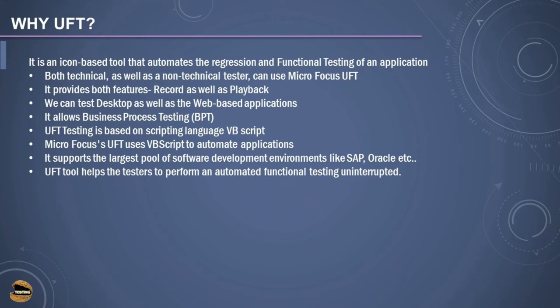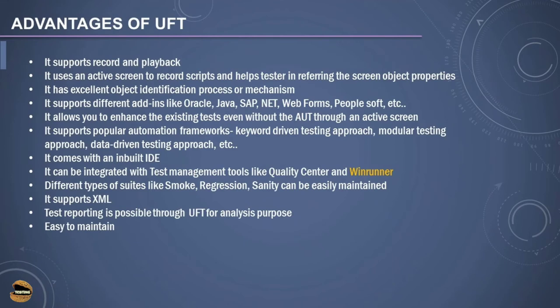You are supposed to select the right set of add-ins or protocols before you start working on a particular test. UFT also helps testers perform automated functional testing uninterrupted, which means it can execute tests on local as well as cloud environments. Among the advantages of UFT: it supports record and playback, where a user can start recording and do the necessary playback of the script. It uses an active screen to record scripts and helps testers refer to screen object properties even after recording is complete. It has an excellent object identification mechanism which makes your job more convenient when working with different types of objects — be it a text box, a drop-down, or a radio button.